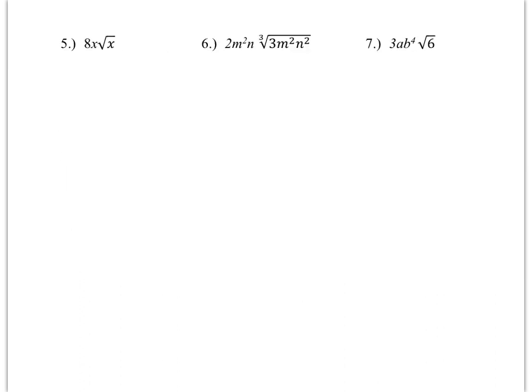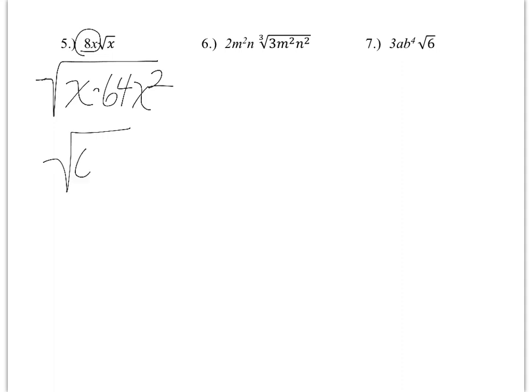If you think you've got it, go ahead and stop the video and see if you can get them. If you still need a little bit of help, stay tuned and I'll help you. I'm going to square the outside of 8x because it's a square root — there's already an x inside, so I square this whole thing. That gives me 64x squared. Put it together with the existing x inside, and you get the square root of 64x to the third.